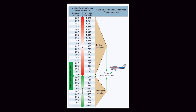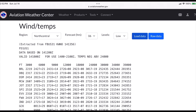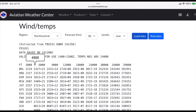The intermediate value is between two index values, and it's the value we're interested in finding an answer for. In the first problem, the intermediate value would be 29.87. In the second problem, the intermediate value would be 1,300 feet pressure altitude. In the third problem, the intermediate value would be a pressure altitude of 4,500 feet.